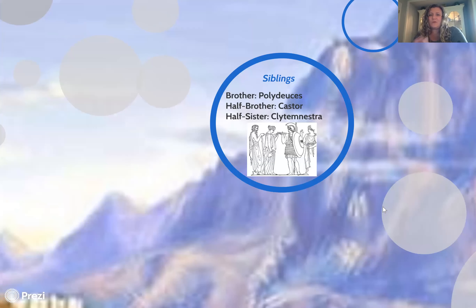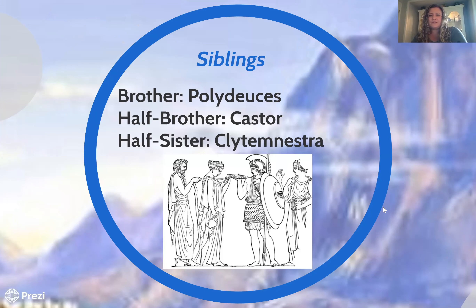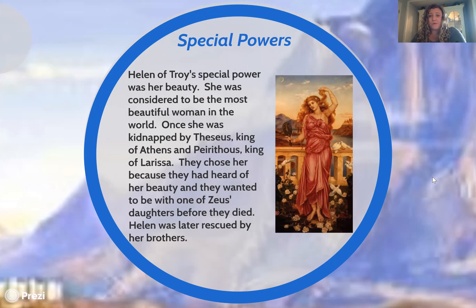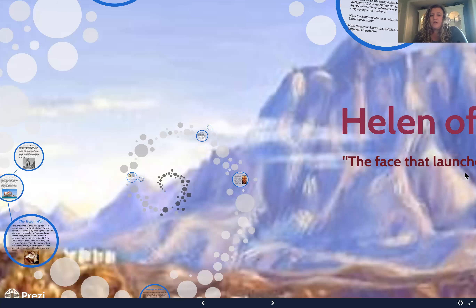She has quite a few siblings — her half-sister is Clytemnestra and her half-brother is Castor. She has a very deep and wide history throughout Greek mythology. One of her most special powers as a demigoddess was her beauty; she was considered to be the most beautiful woman in the world. And because of that beauty, she was kidnapped.